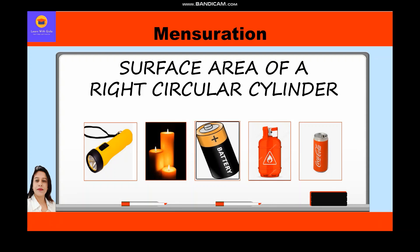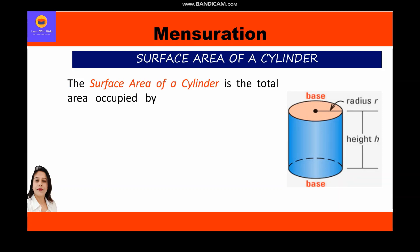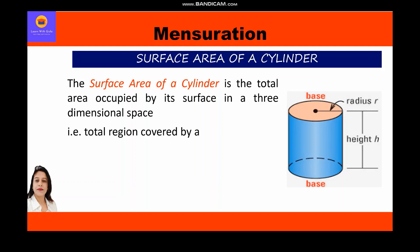Let's get started with the surface area of a cylinder. The surface area of a cylinder is the total area occupied by its surface in three-dimensional space — that is, the total region covered by a cylinder in three-dimensional space. We know that a cylinder is a three-dimensional object, meaning it is not restricted to one plane.